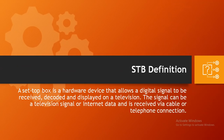In this session we learn about the basic concepts and introduction of the set-top box. In incremental sessions I will explain each and every concept and component of this set-top box. HTV is the abbreviation used for set-top box. A set-top box is a hardware device that allows a digital signal to be received, decoded, and displayed on a television. The signal can be a television signal or internet data, received via cable or telephone connection. HTV converts a digital signal to an analog signal to enable a viewer to watch content on television.